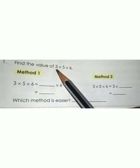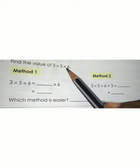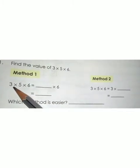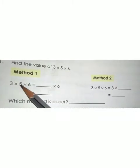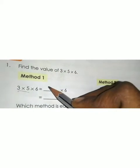Find the value of 3 × 5 × 6. You can use either method 1 or method 2. Using method 1, consider the first 2 values: 3 × 5 = 15.